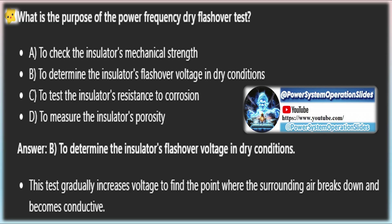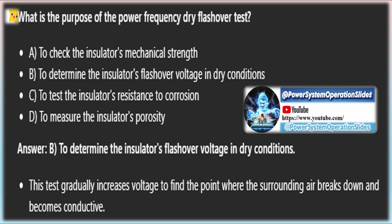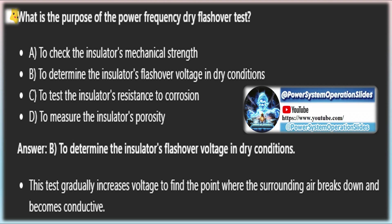Temperature cycle test: the insulator is first heated in water at 70°C for one hour, then immediately cooled in water at 7°C for another hour. This cycle is repeated three times. Afterward, the insulator is dried and its glazing is inspected for any damage or deterioration.